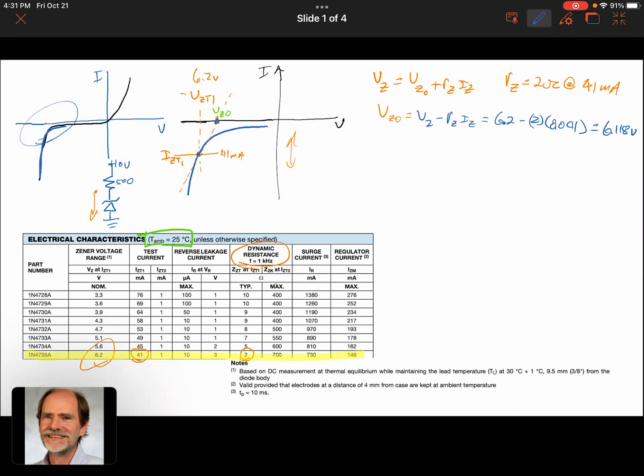We also sometimes would like to know what the knee voltage is. That would be where it's kind of this curvy part. That's what the other value is. Izt2 and Izt1, you can give those for the, or use those, to find the knee voltages.